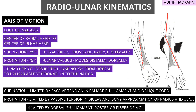Pronation is also limited by passive tension in the biceps, and this is where the position of the elbow matters. If the elbow is more in flexion it won't have much effect because the biceps is relaxed, but in extension the biceps is already stretched at the elbow joint, and with pronation at the radio-ulnar joint that will create additional passive tension. Pronation is also restricted by bony approximation, where the radius touches the ulna and the movement is blocked.